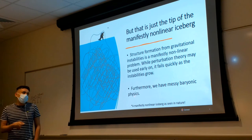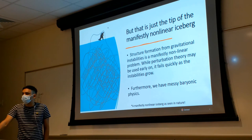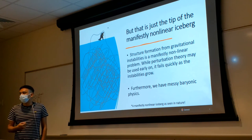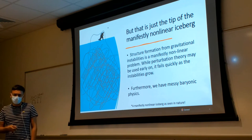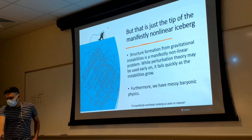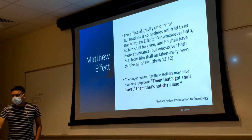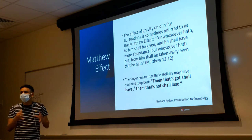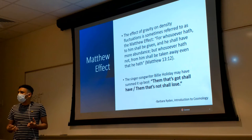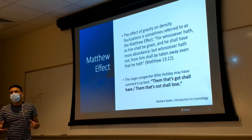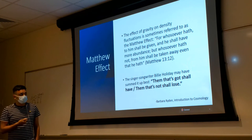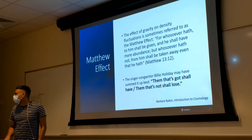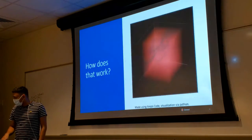Furthermore, we have messy baryonic physics: the formation of stars, protostar outflows, supernovae that push matter out, black hole feedback and jets from black holes that affect star formation — all very, very non-linear. This is called the Matthew effect, from the Bible — it's basically how structure forms in the early universe. Some parts have a little more energy density than others, which attracts more matter, creating a feedback loop that eventually leads to structure formation.